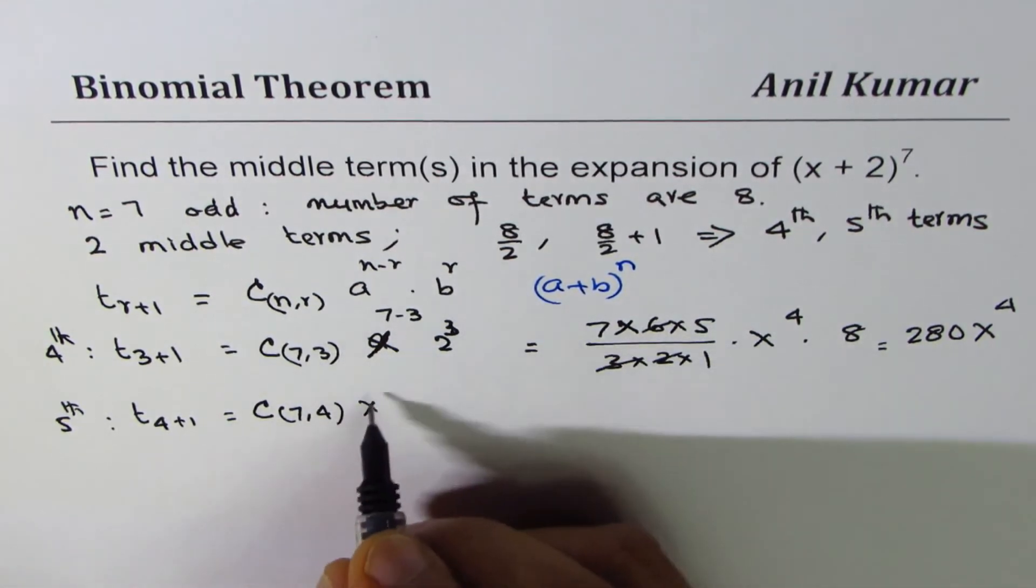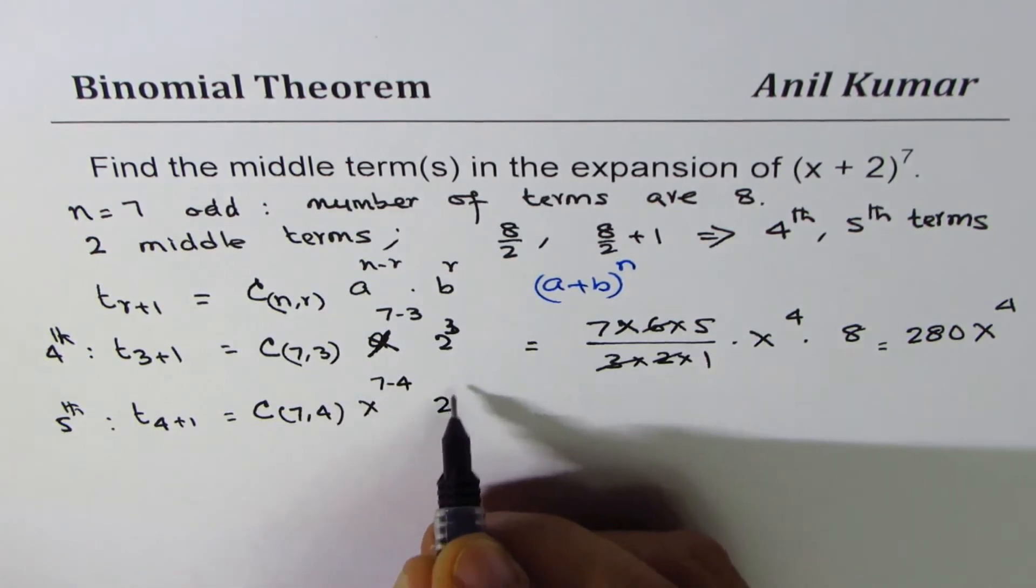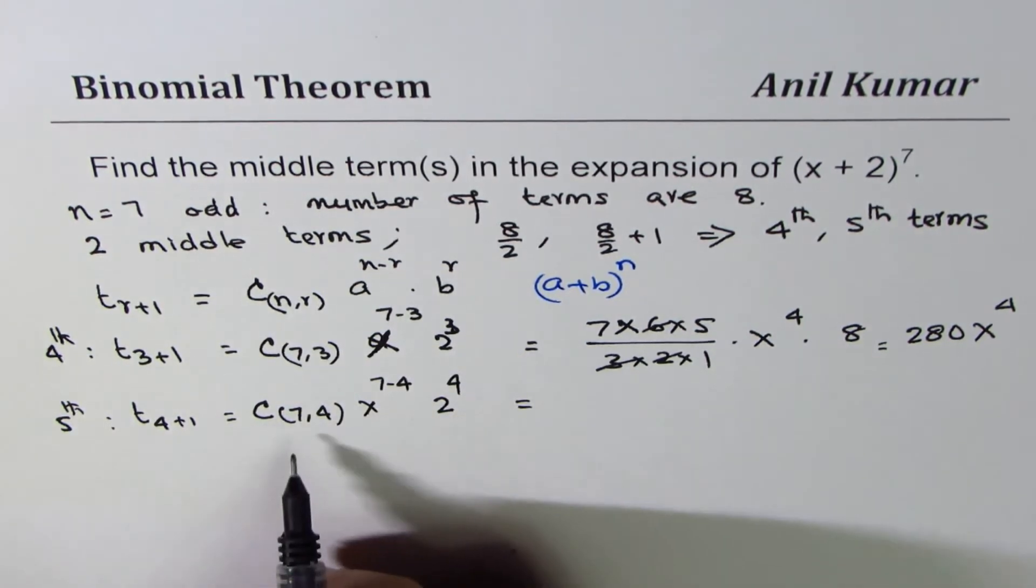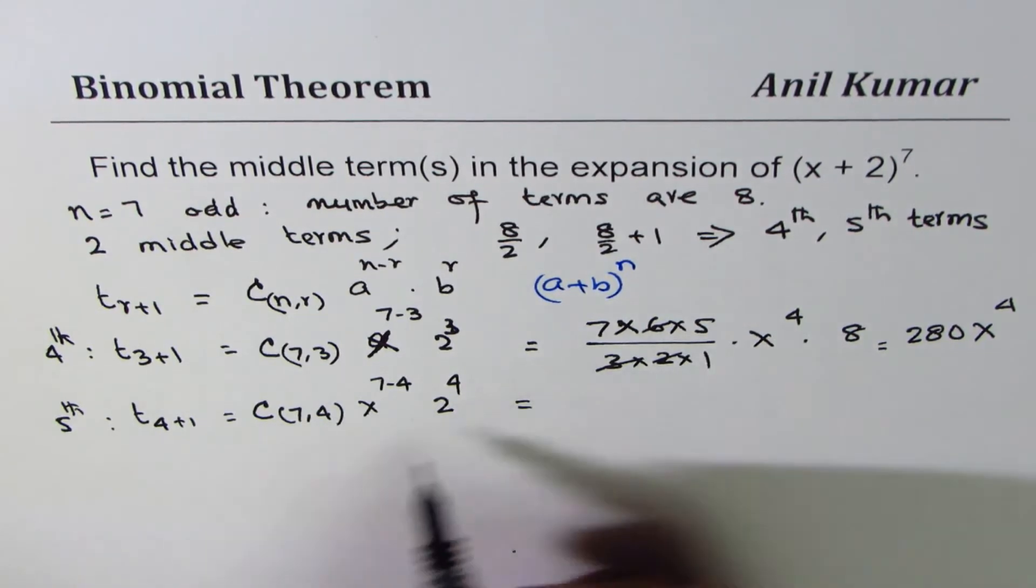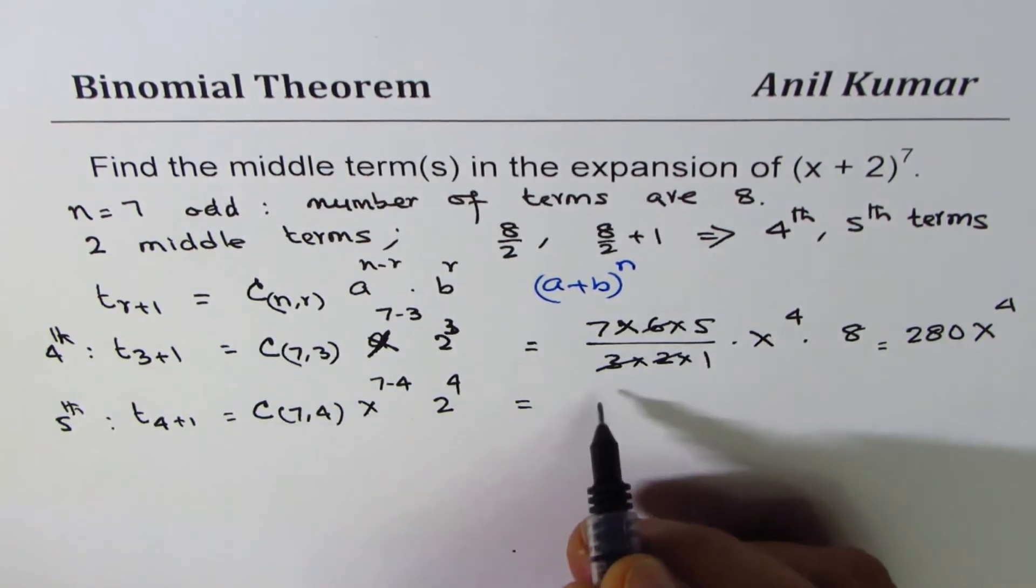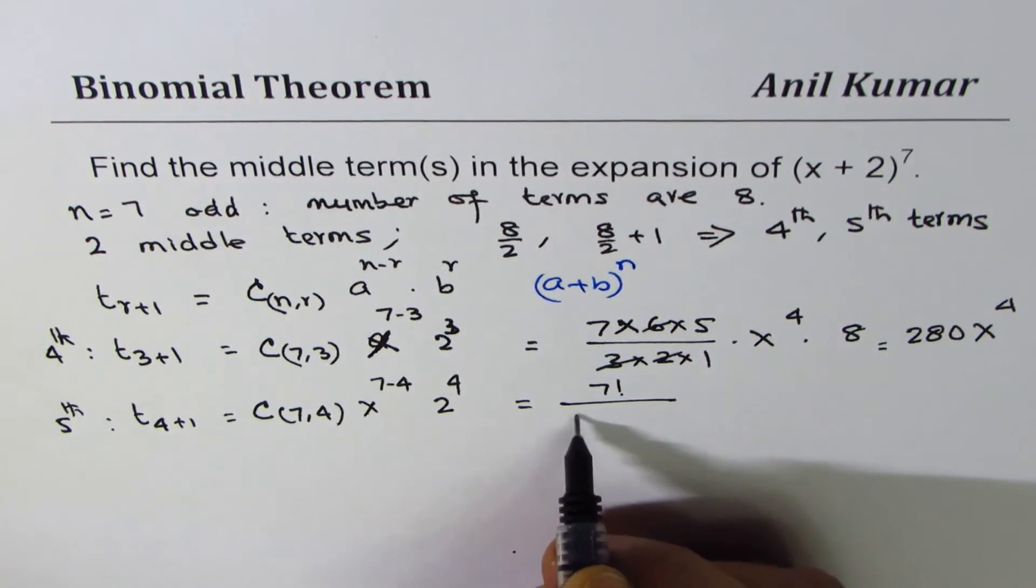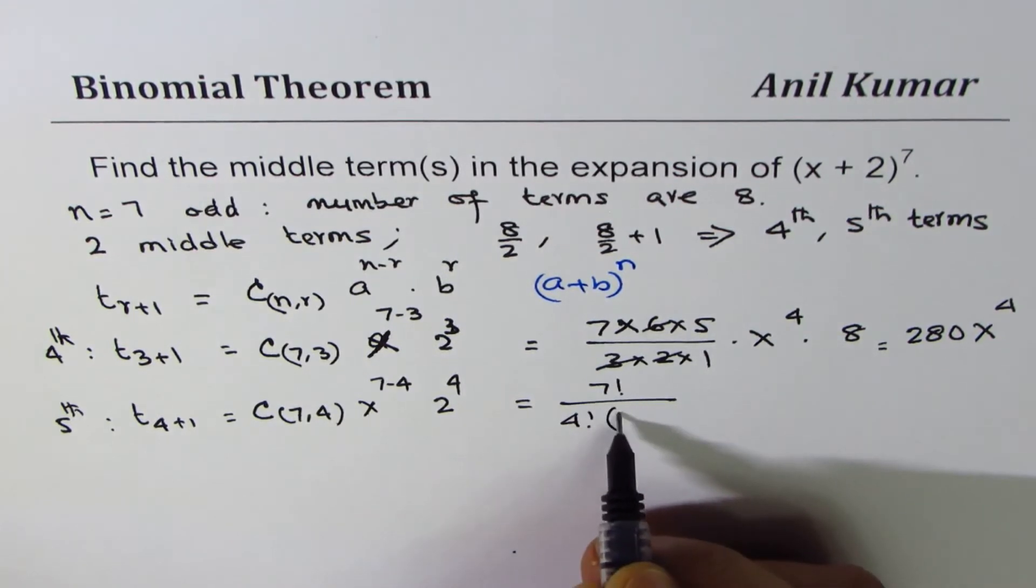X to the power of 7 minus 4, 2 to the power of 4. And that gives us, the coefficient is 7 factorial over 4 factorial times (7 minus 4) factorial.